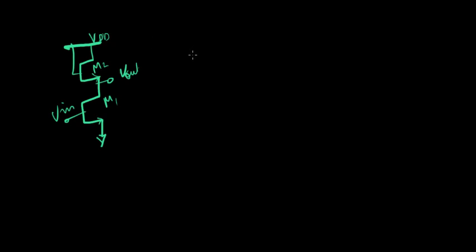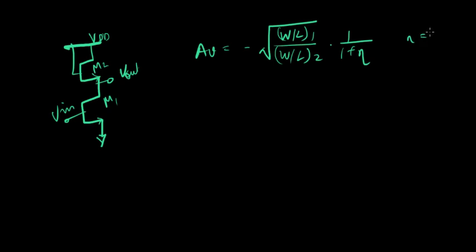So the gain equation we came to, which included body effect, was AV equals W over L1 over W over L2 times 1 over 1 plus eta, where eta was GMB2 over GM2. I would suggest you go back to the previous lecture on common source amplifiers, diode-connected load, output characteristics, to jog your memory on this one, and come back to this one.